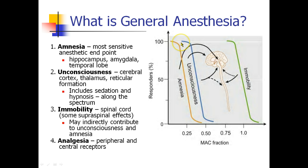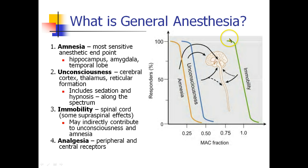Unconsciousness is a little bit different. For someone to be totally unconscious and unresponsive occurs not at the areas of emotion and memory, but more at your consciousness centers: your cerebral cortex, your thalamus, the reticular formation in your brain stem. Sedation and hypnosis are all points along the spectrum of consciousness, and you need more anesthesia to achieve unconsciousness. Finally, there's immobility — for a patient to not move under anesthesia — and that requires quite a bit more anesthesia. Patients can be unconscious and amnestic but still move under anesthesia. This occurs at the spinal cord and possibly the brain as well.